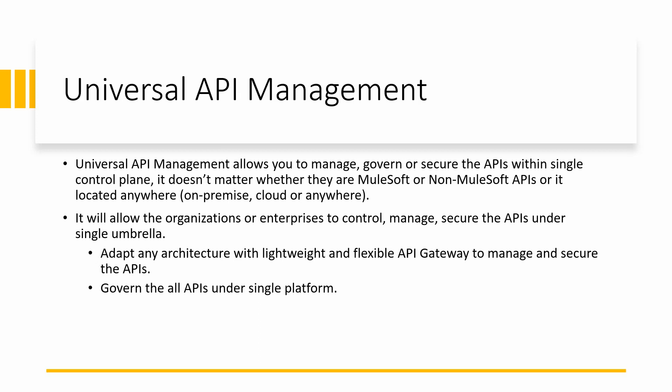For example, you may have an API written in Spring Boot, one written in MuleSoft, one in Java, and one in .NET. For enabling API management on top of all of these, you can use this universal API management capability, which simplifies your application network. You can manage each and every API using a single Anypoint platform — monitoring, discovering, governing, and managing your APIs from a single control plane.